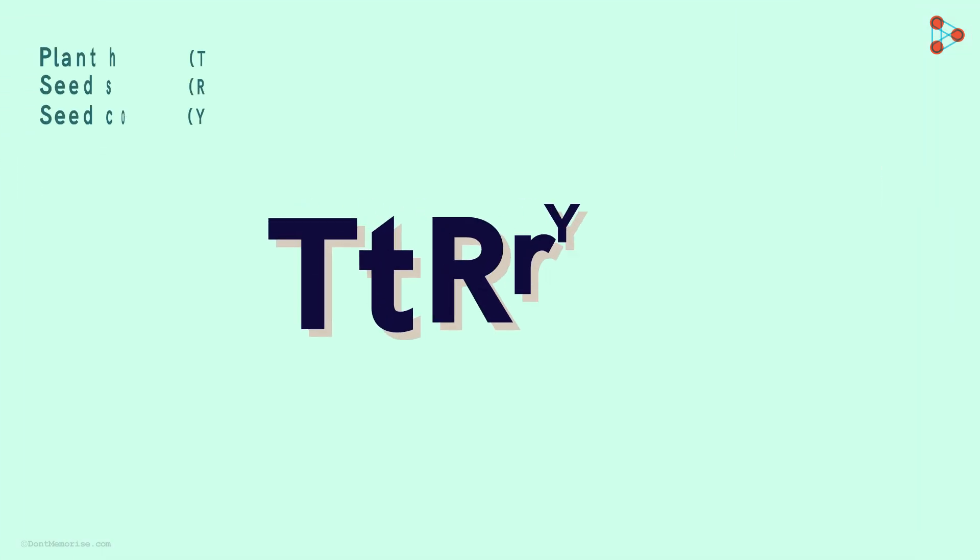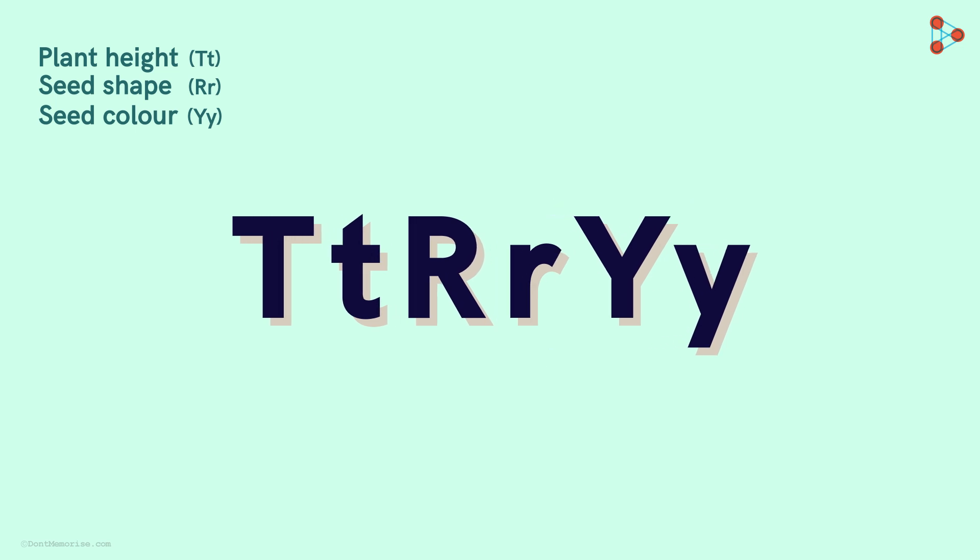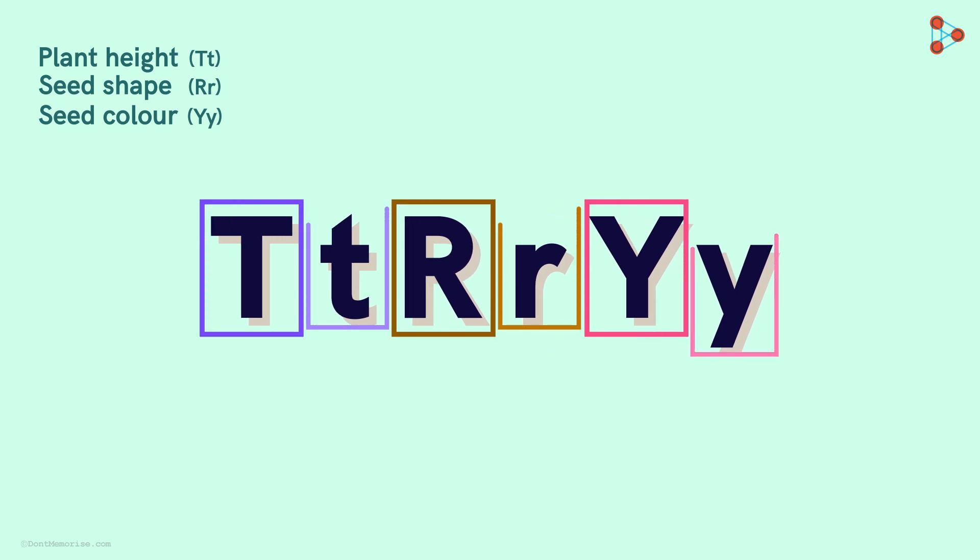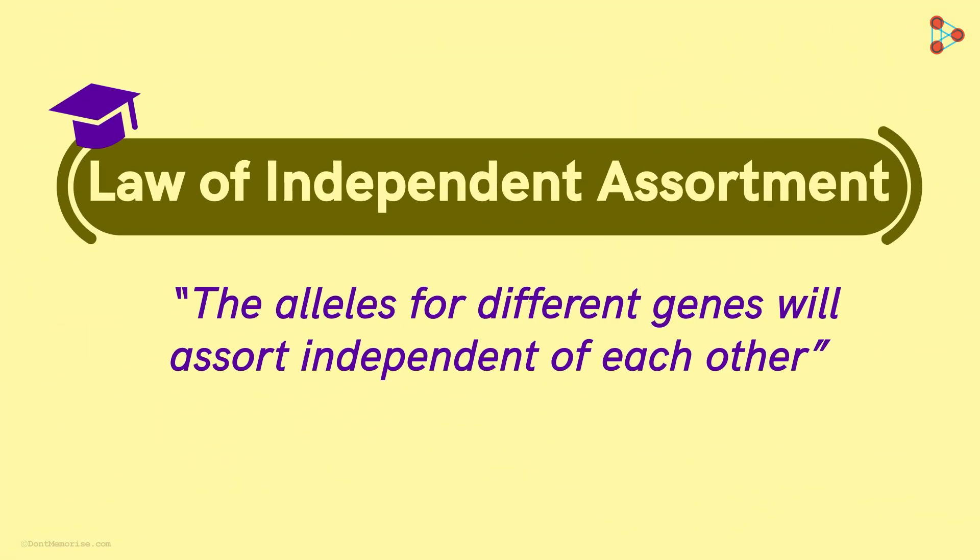The genotype of this parent is TtRrYy, all letters written in one upper and one lower case to represent heterozygous genotype! To get the gametes, we take the help of the law of independent assortment!